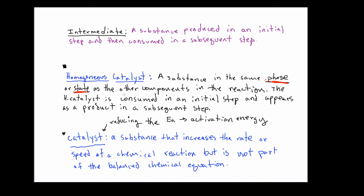And so if there is a homogeneous catalyst in there, which there is, and I'll point out to the viewer what that's going to be, that particular substance needs to be in the same physical state as the other components that are involved in the elementary steps and therefore the overall balanced chemical equation.